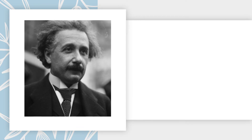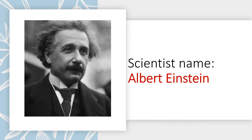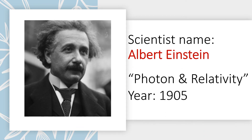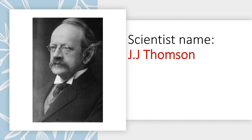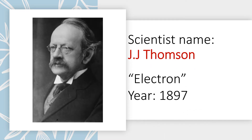Scientist Albert Einstein discovered photon and relativity in year 1905. Scientist J.J. Thompson discovered the electron in year 1897.